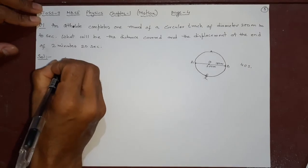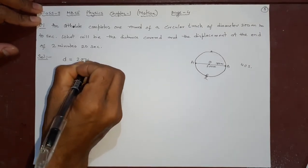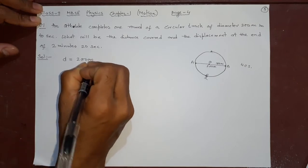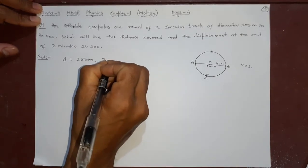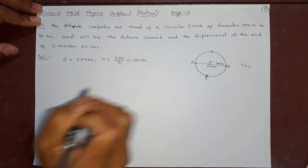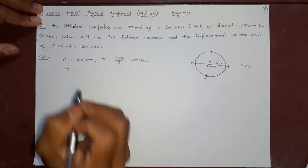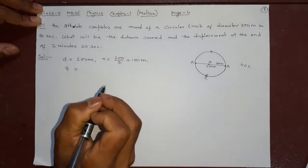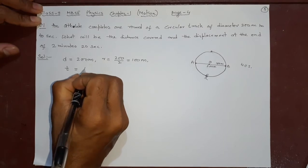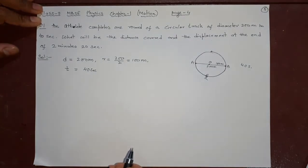Let us see. The diameter will be 200 meters. If diameter is 200 meters, the radius will be 200 by 2, that is 100 meters. We will use it when required. Now, time for one round is how much? It is 40 seconds. We don't know how many rounds it will do. Only we know the time it will take.